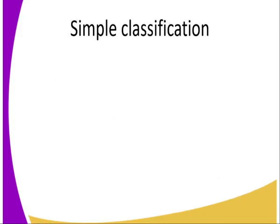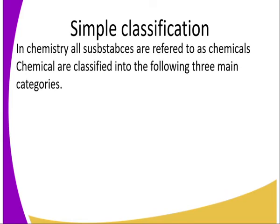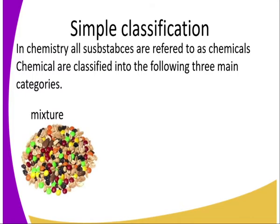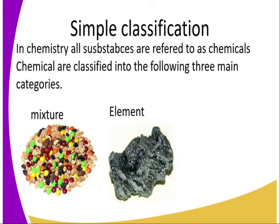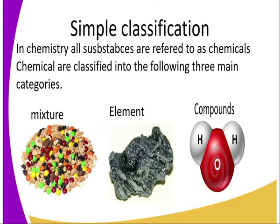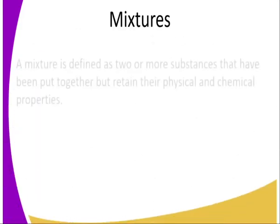How are substances classified in chemistry? All substances are referred to as chemicals, and chemicals are classified into the following three main categories: number one, mixtures; if a substance is not a mixture, therefore it is an element; if it is not an element, it is a compound. Those are the three main classifications of substances — mixture, element, or compound.